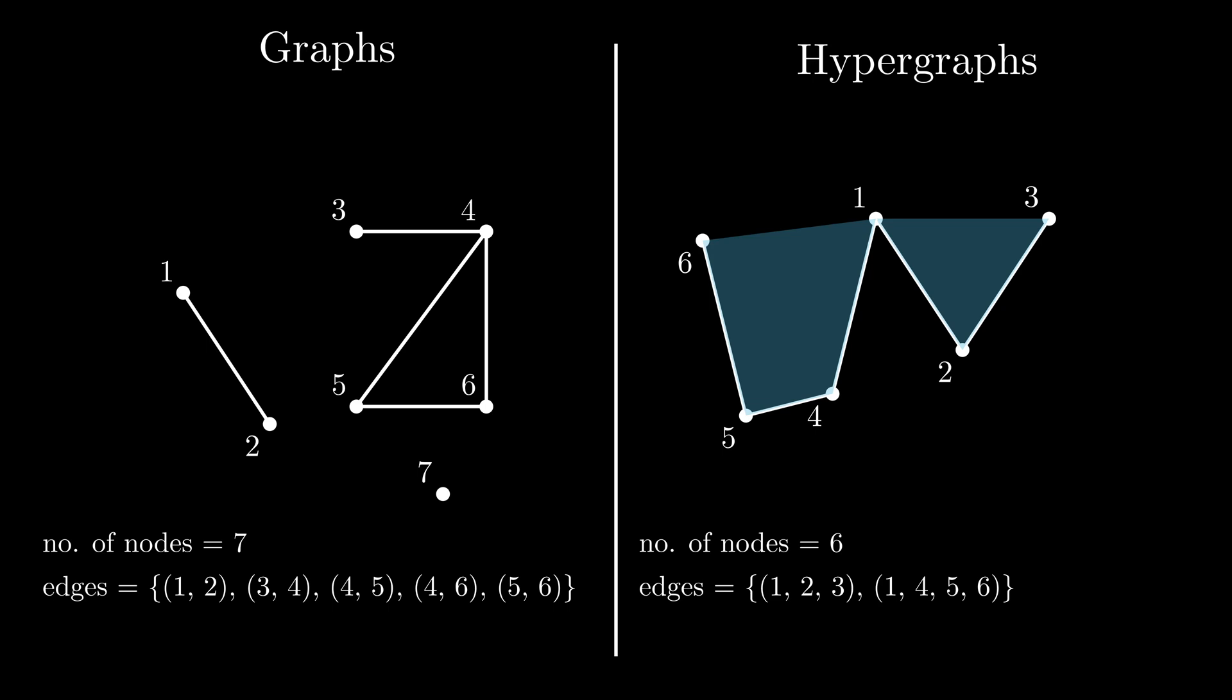A hypergraph is called R uniform or an R graph if every edge has size R. Our example does not have this property for any R since one edge contains 3 nodes and the other one 4. But if we delete the node number 6, we get a 3 uniform hypergraph or a 3 graph.